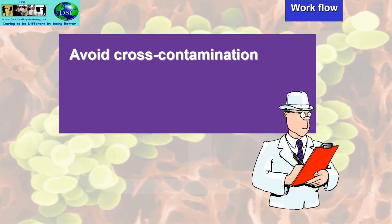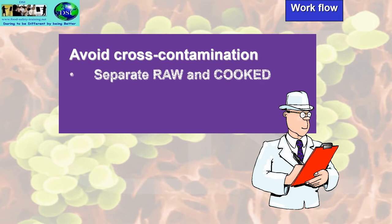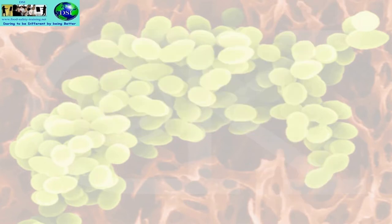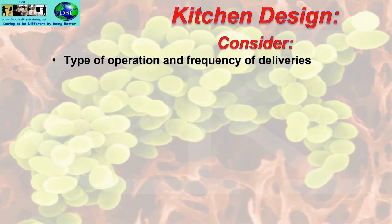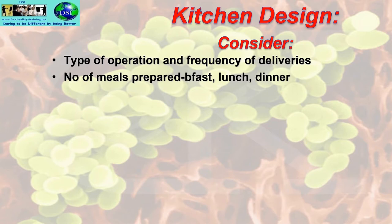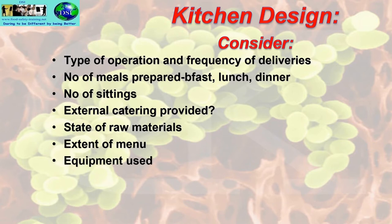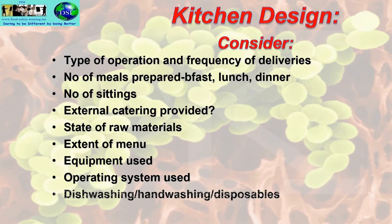Workflow must be designed to avoid cross-contamination: separate raw and cooked food, separate dirty and clean, and create a continuous workflow. When considering kitchen design, you must factor in the type of operation, frequency of deliveries, number of meals prepared — breakfast, lunch, dinner — number of sittings, whether external catering is needed, the state of raw materials, what equipment will be used, the operating system (dishwashing, hand washing, disposables), and the maximum output from the kitchen.